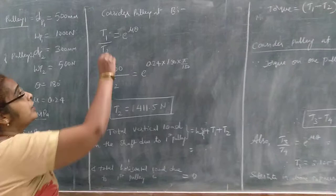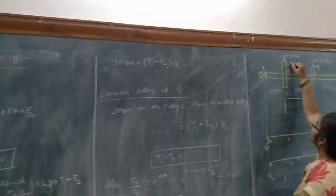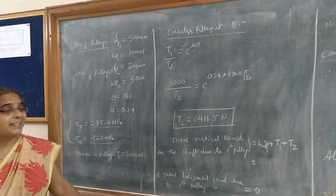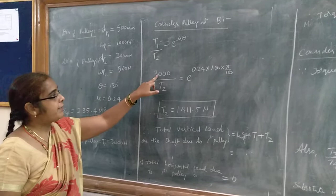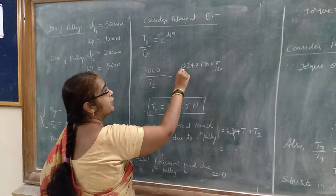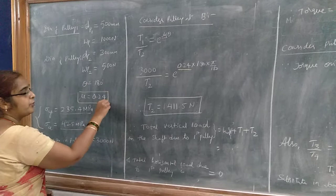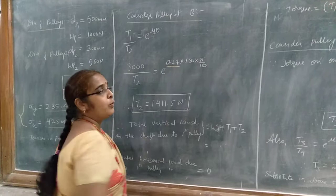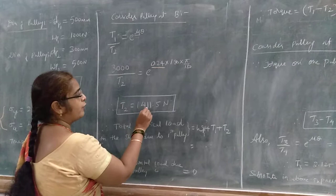Let us first calculate the tensions. Consider the pulley at B. We know the ratio of tensions: T1/T2 = e^(mu*theta). T1 is given as 3000 N. Mu is 0.24 and theta is 180 degrees, which converts to pi radians. Substituting these values, we can find the value of T2 as 1411.5 N.